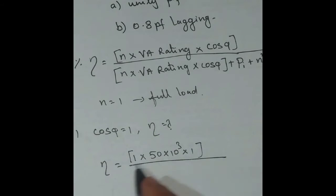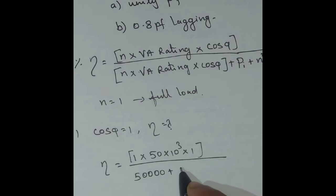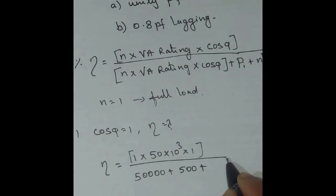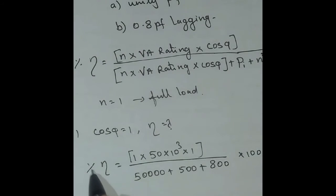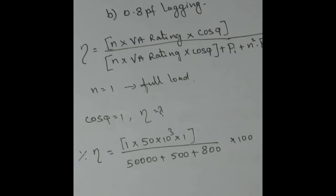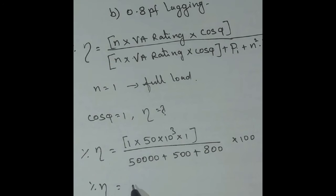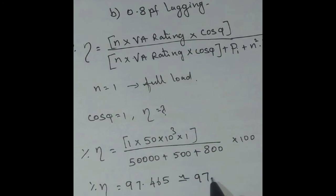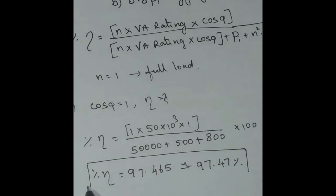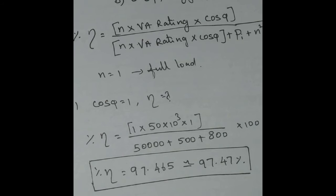The numerator is 50,000. The iron loss is 500 watt and full load copper loss is 800 watt. Multiplying by 100 for percentage, solving gives efficiency of 97.465%, or approximately 97.47%. This is the efficiency at unity power factor.